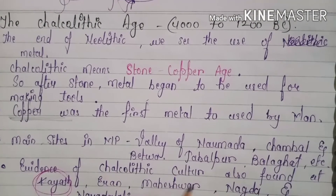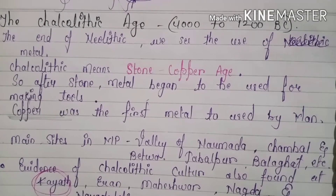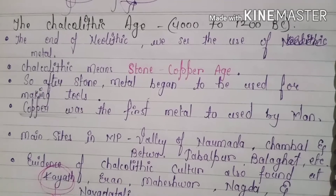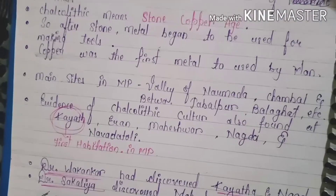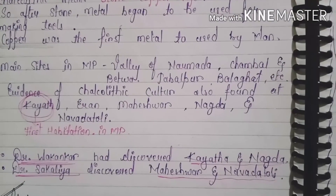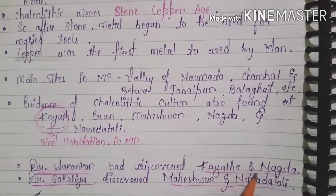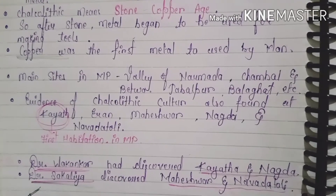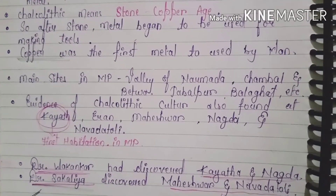Evidence of Chalcolithic culture has also been found at Kayatha — the first habitation site of Madhya Pradesh. Other sites include Eran, Maheshwar, and Nagda. Dr. Vakankar discovered Kayatha and Nagda. Sakaliyah, Maheshwar, and Nagda Doli were also discovered.